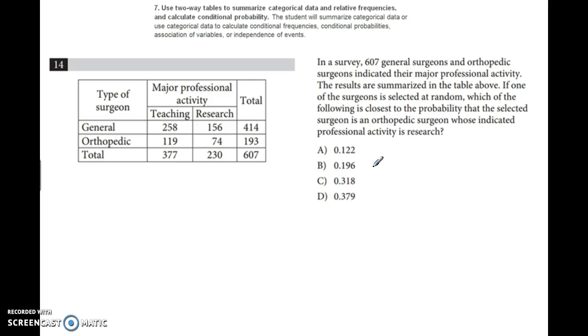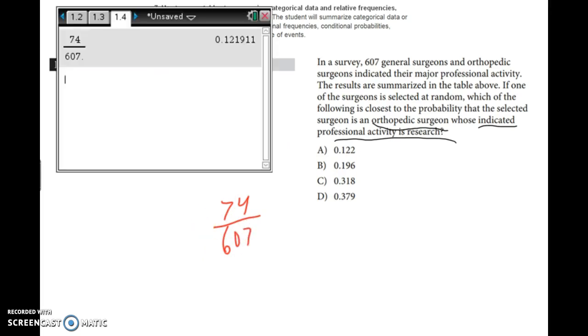Two-way tables summarize categorical data. This is just understanding and reading the question. If one surgeon is selected at random, what's the probability that it's an orthopedic surgeon whose professional activity is research? Looking at orthopedic and research, there were 74 of those. So 74 divided by the grand total of 607. Type that in your calculator and you get 0.121. A is the correct answer. Nothing tricky.